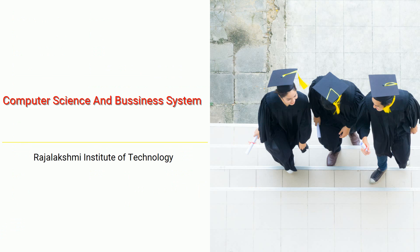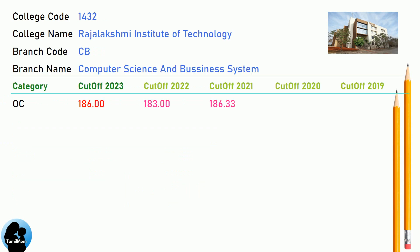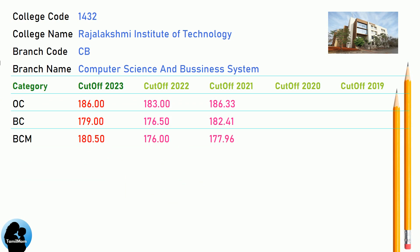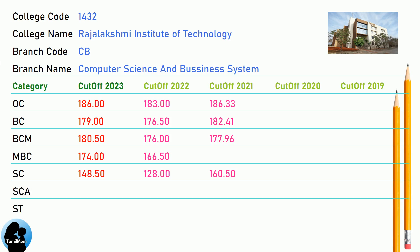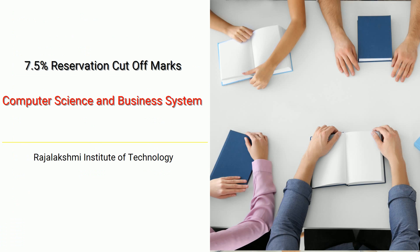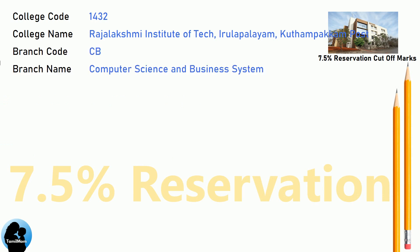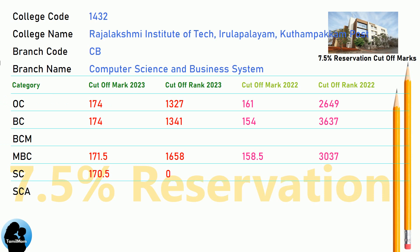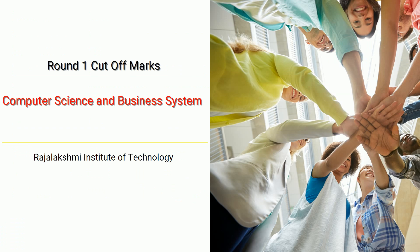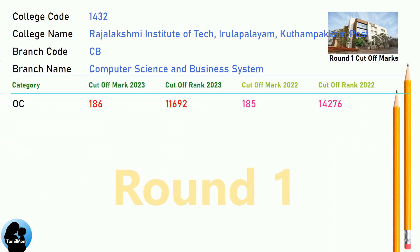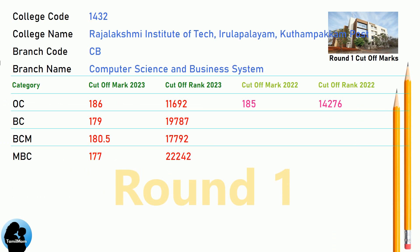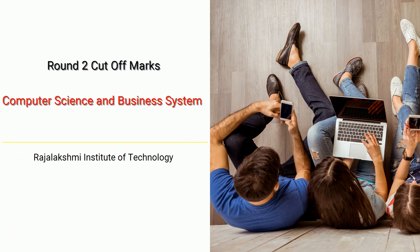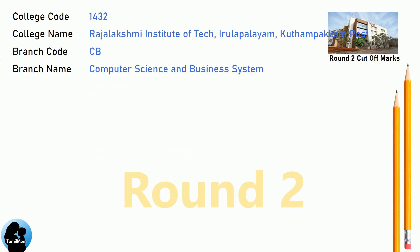DNEA Cut-Off for Rajalakshmi Institute of Technology in Computer Science and Business Systems. DNEA 7.5 Reservation Cut-Off, DNEA Round 1 Cut-Off, and DNEA Round 2 Cut-Off for Rajalakshmi Institute of Technology in Computer Science and Business Systems.